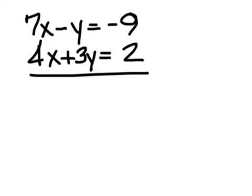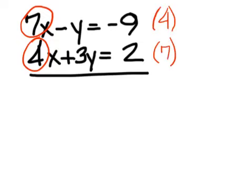7x minus y equals negative 9. 4x plus 3y equals 2. Solve the system of equations. The solution for the practice problem, you have 7 and 4. The least common multiple is 28. So, I'm multiplying the top equation by 4 and the bottom by 7.